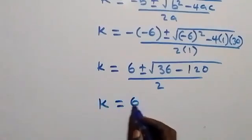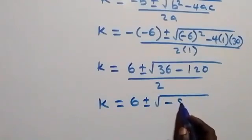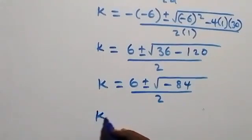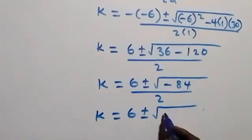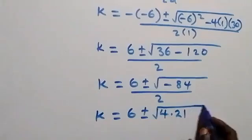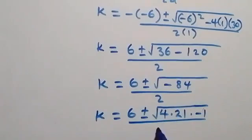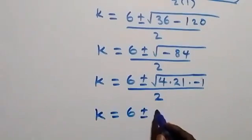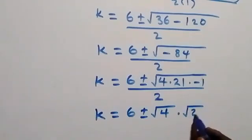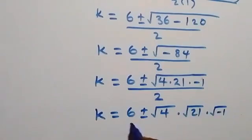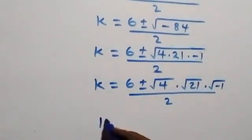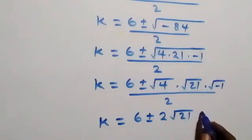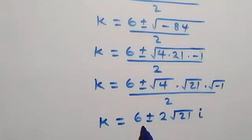This becomes k equals 6 plus or minus square root of 36 minus 120, over 2, which gives square root of minus 84. We can write minus 84 as 4 times 21 times minus 1, so separating the roots we have root 4 times root 21 times root minus 1, over 2. Root minus 1 here is i, the imaginary unit, so we have 2 root 21 i, divided by 2.